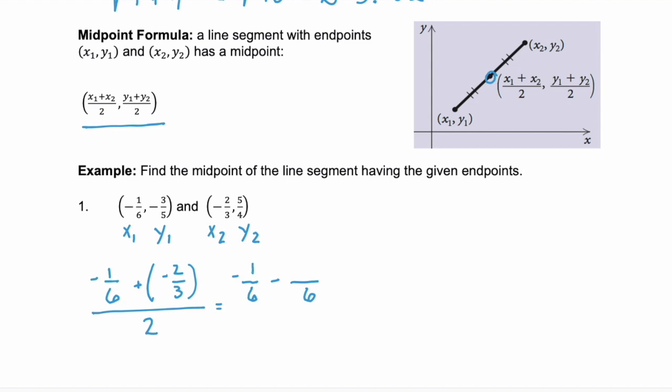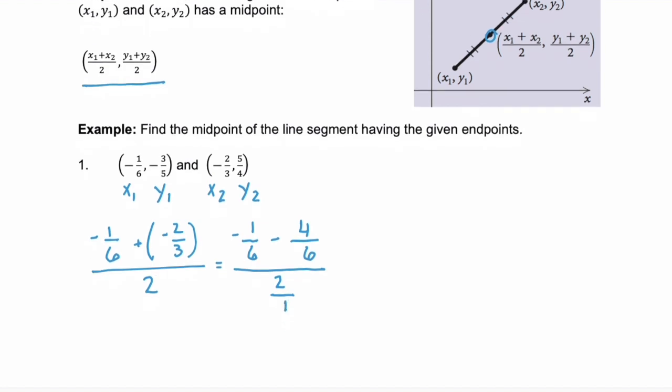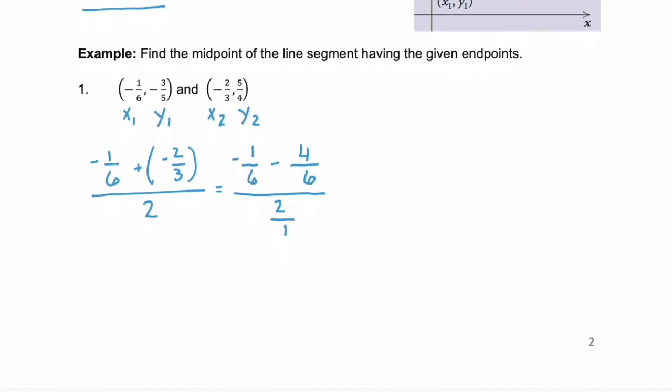So the first fraction stays as negative 1/6. And the second one becomes negative 4/6. And this is still over 2. But remember, we can write this as 2 over 1. Now, continue to simplify that numerator, and you get negative 5/6, because we're subtracting those two fractions. And that's divided by 2 over 1.